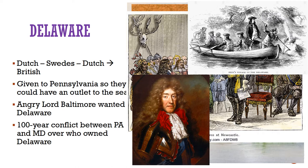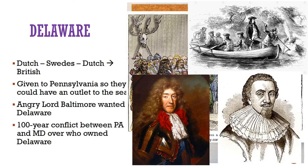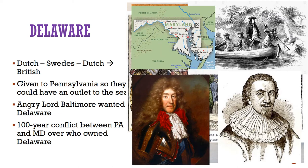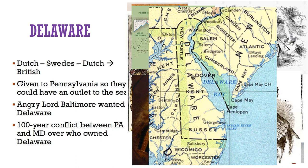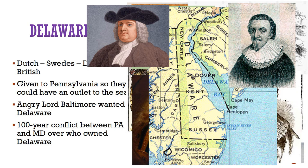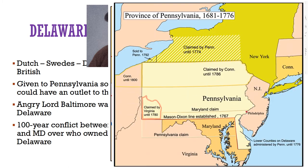The Duke agreed, but this decision angered a man named Lord Baltimore, the first proprietary governor of Maryland, who believed that he had rights to Delaware too. A lengthy and occasionally violent 100-year conflict between Penn's heirs and Baltimore's heirs was finally settled when Delaware's border was defined in 1751, and the Maryland-Pennsylvania and Maryland-Delaware borders were defined as part of the Mason-Dixon line in 1768.